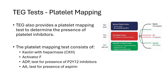TEG also offers a platelet mapping test to determine if platelet inhibitors are present in the patient. This test separately adds arachidonic acid and ADP — both platelet activators — resulting in platelet activation. However, the presence of platelet inhibitor medicines will inhibit platelet activation despite the presence of ADP and/or arachidonic acid. The platelet mapping test, when ordered, typically runs a cartridge with several tests included in order to assess overall coagulation and clot strength.